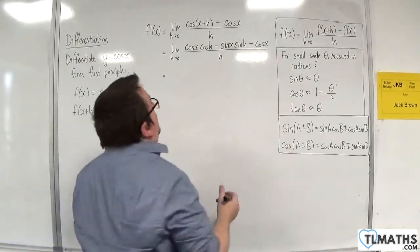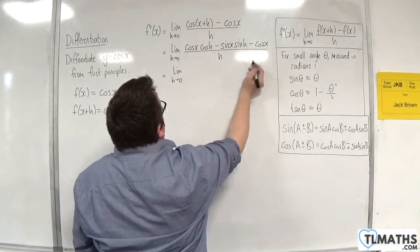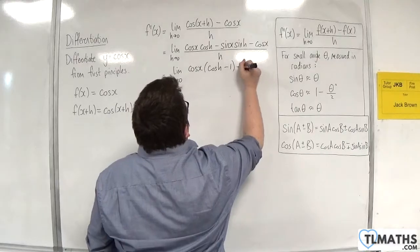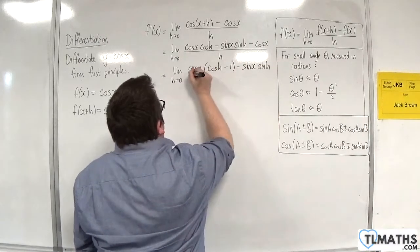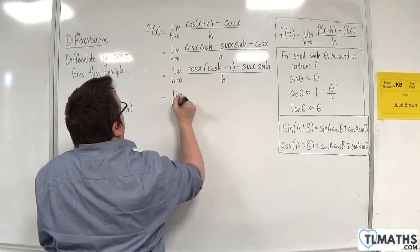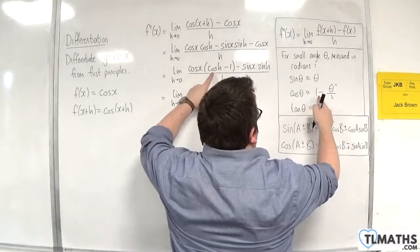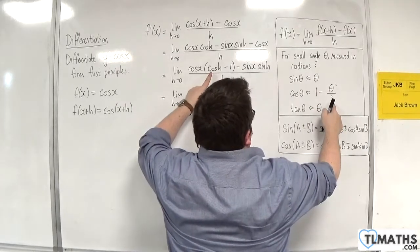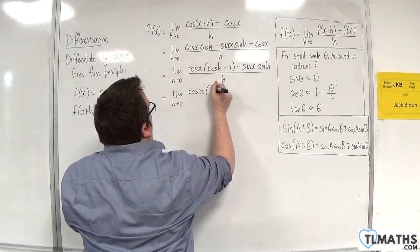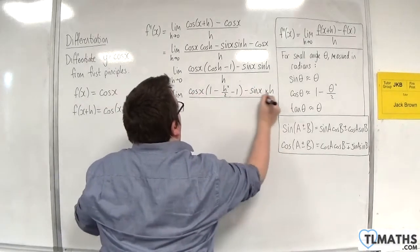Now I'm going to group together the cosine h terms, so we'll have the limit as h tends to 0, with the terms involving cosine x grouped together. As h gets smaller and closer to 0, cosine h will get closer to 1 minus h squared over 2, and sine h will get closer to h. So we get: cosine x times (1 minus h squared over 2), take away 1, take away sine x times h, all over h.